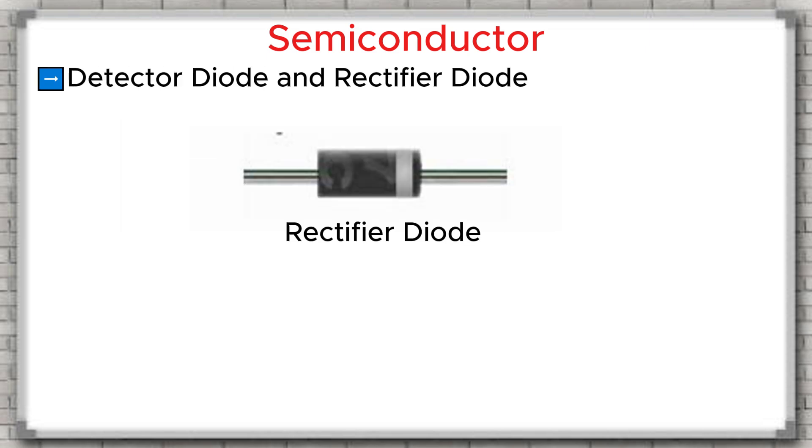Detector Diode and Rectifier Diode. Detector Diode. This is a small diode, usually covered with a glass case. It is also called a point-contact diode, because the contact between the p-type and n-type semiconductors is made at a very small point. This design helps to reduce parasitic capacitance. Detector diodes are mainly used in high-frequency circuits to extract or detect the signal from a modulated wave. Rectifier Diode. A rectifier diode is used to convert alternating current AC into direct current DC. It is commonly used in power supply circuits with a frequency of 50 Hz. These rectifier diodes are usually classified by current rating, for example, 1 A, 2 A, or 5 A.